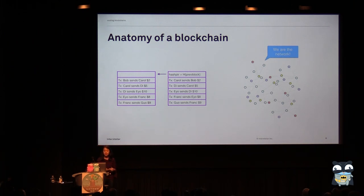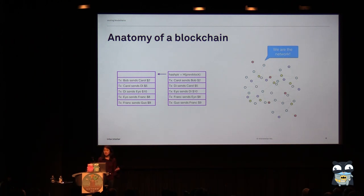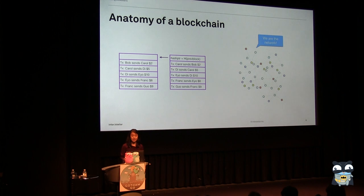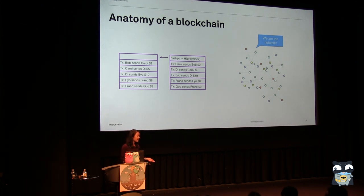So each node is running software that is listening for blocks and validating them. And only when the entire network reaches consensus is a block considered included in the blockchain. What this means is that every node on a blockchain network has to see and validate every single transaction. And that doesn't scale.